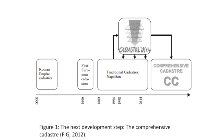The third vision is that land modeling will be approached comprehensively. The fourth vision is that public and private partnerships will work together in cadastral systems. The fifth vision is that paper and pencil cadastral maps will be phased out. The sixth and final vision is that the cadastral map system should be cost-recovery based.